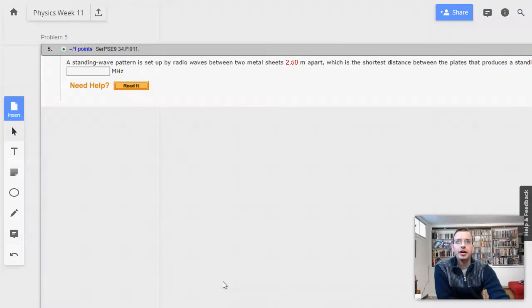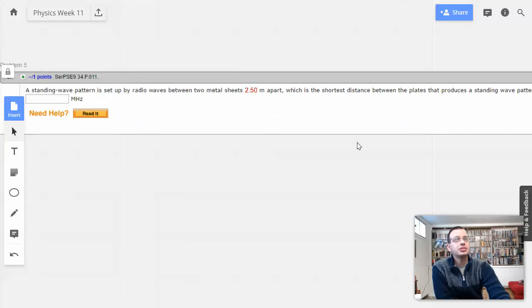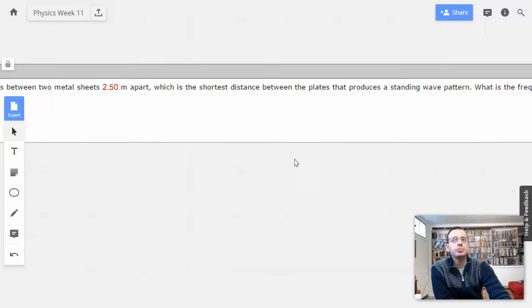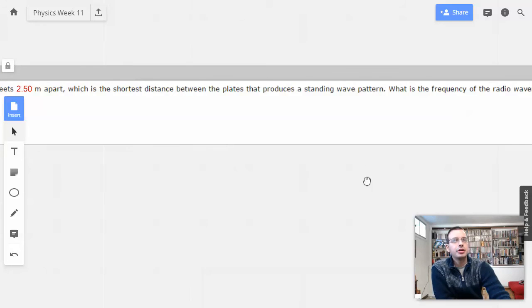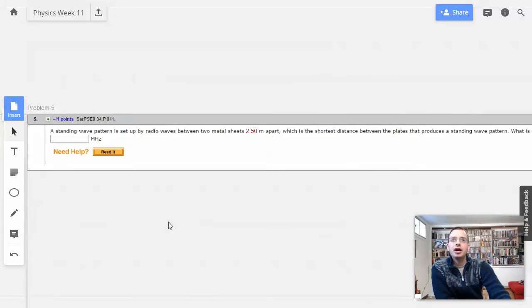Week 11, problem five. A standing wave pattern is set up by radio waves between metal sheets 2.5 meters apart, which is the shortest distance between the two plates that produces a standing wave pattern. What is the frequency of the radio waves?